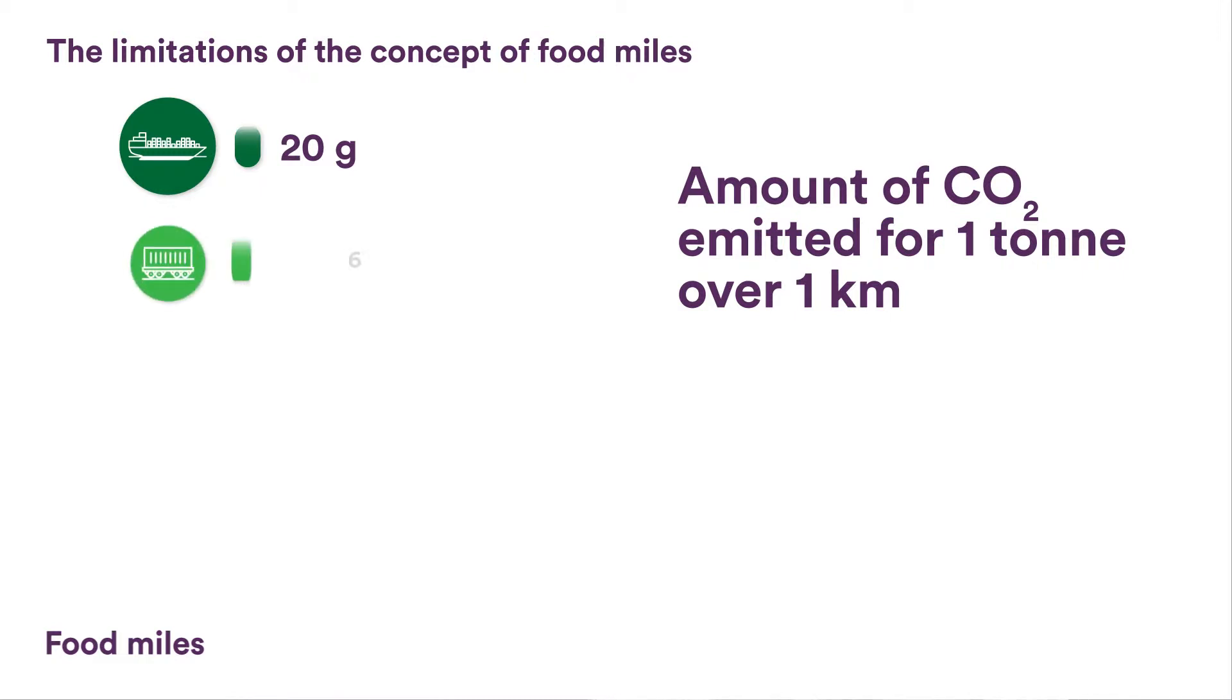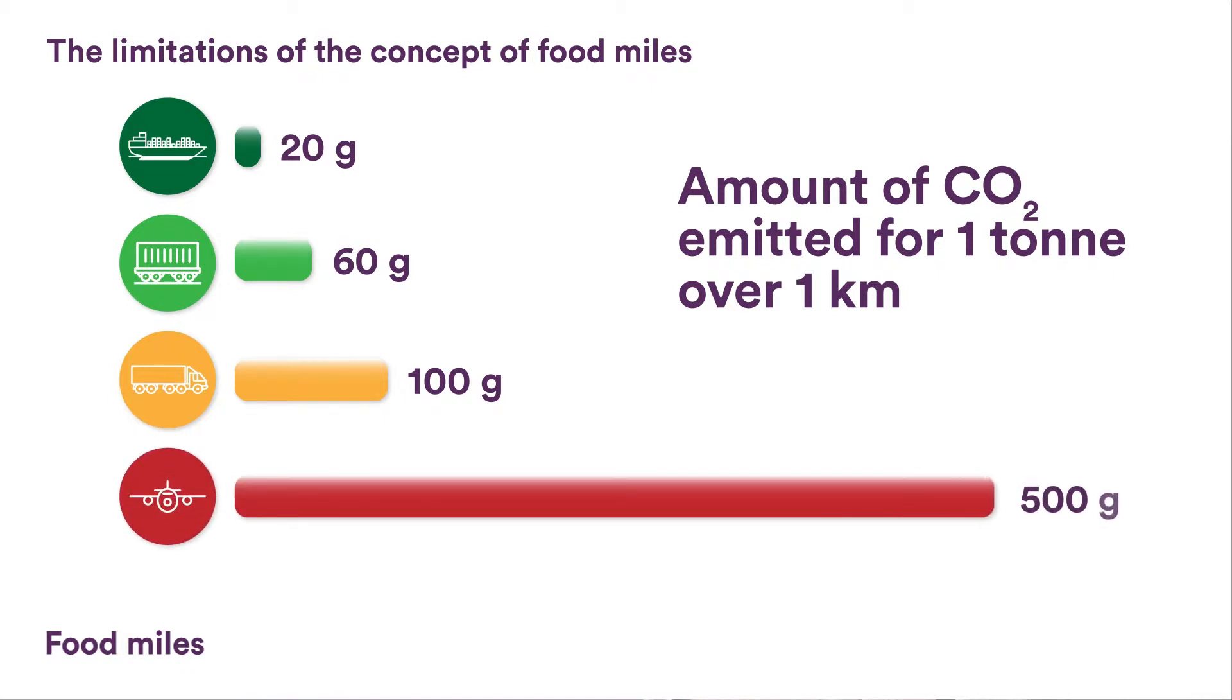Rail and road haulage follow next in the ranking. These means of transport are privileged on a national or continental scale, with rail being used mainly to cover long distances. Finally, air freight has the greatest environmental impact per ton of cargo.